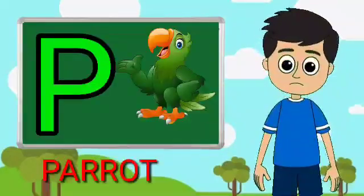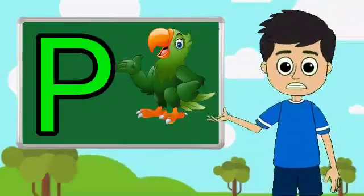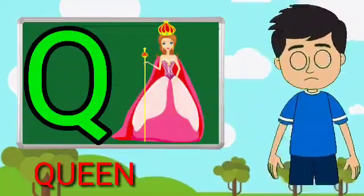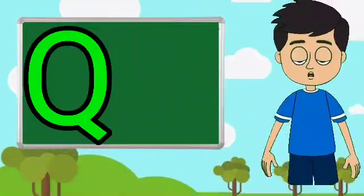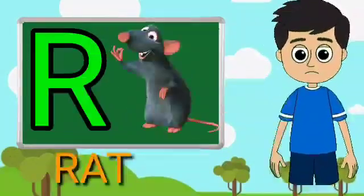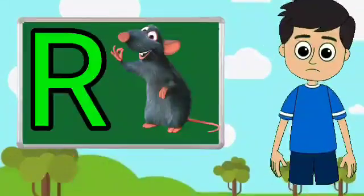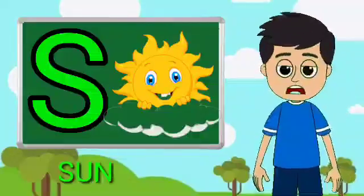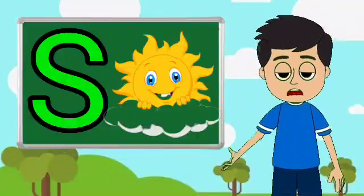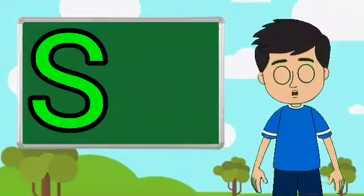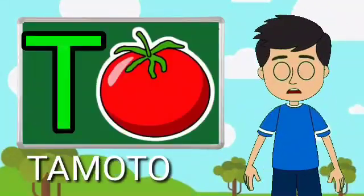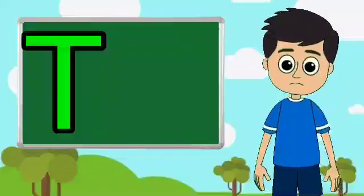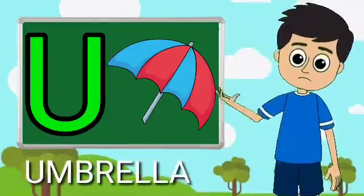E for parrot, U for tune, R for rat, S for sun, E for tomato, U for umbrella.